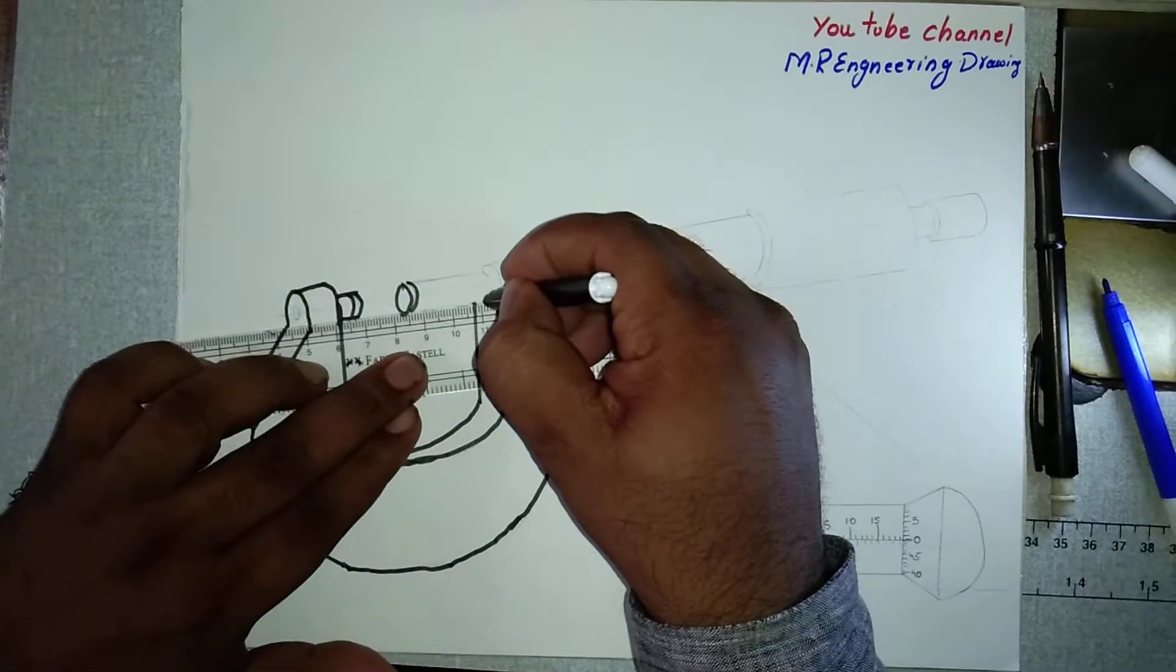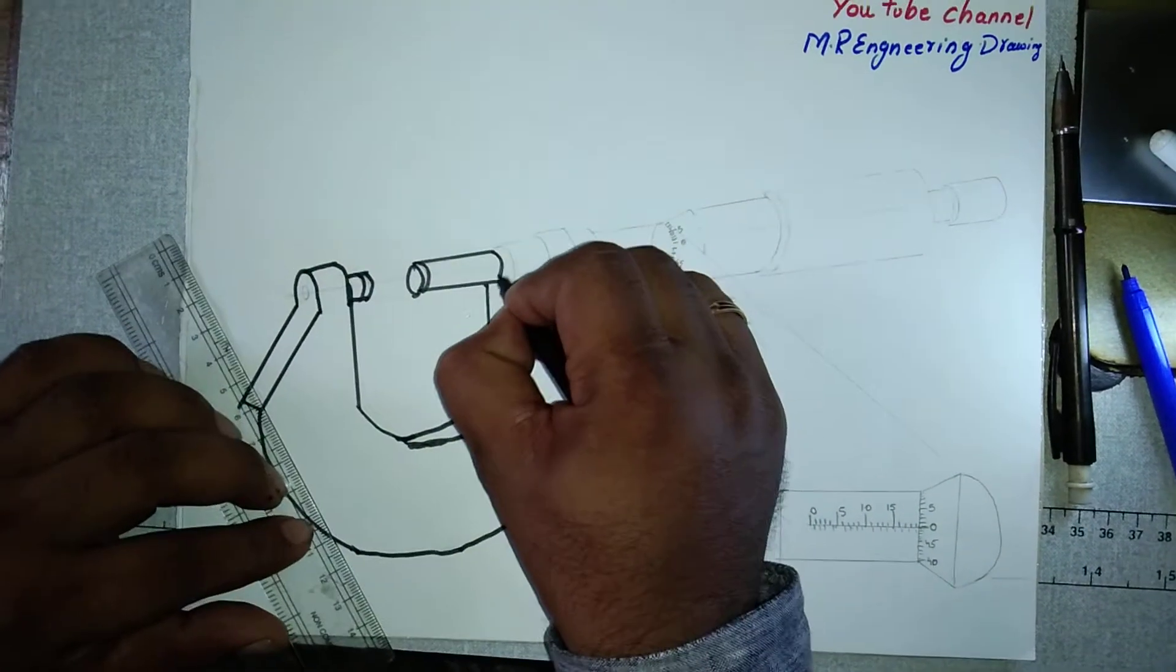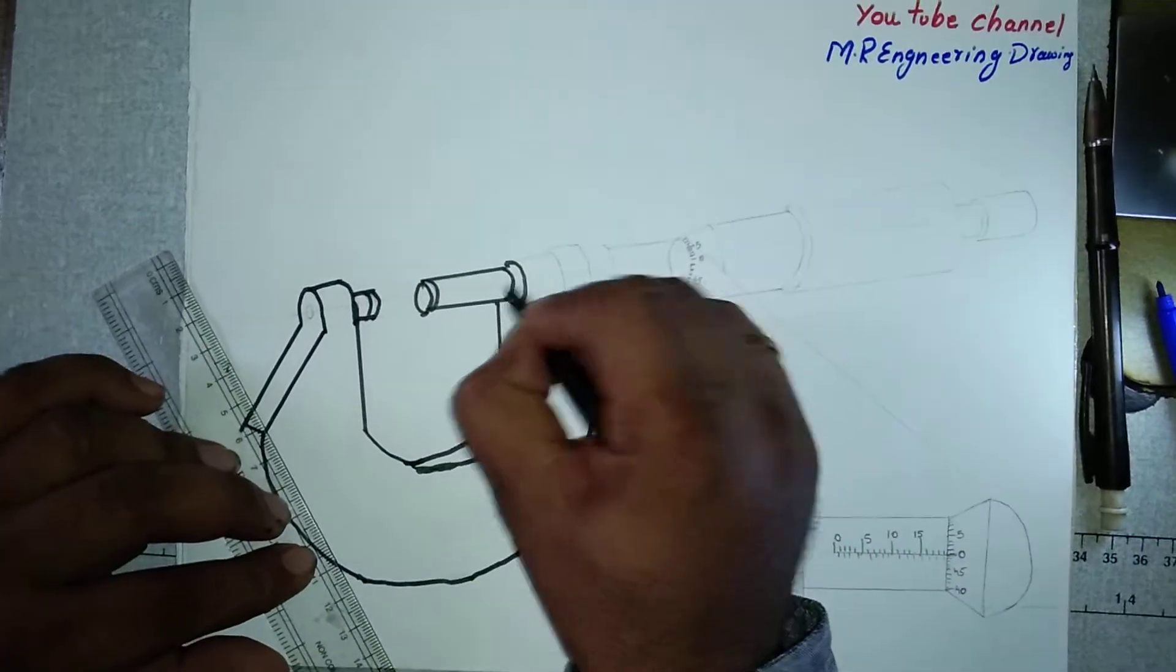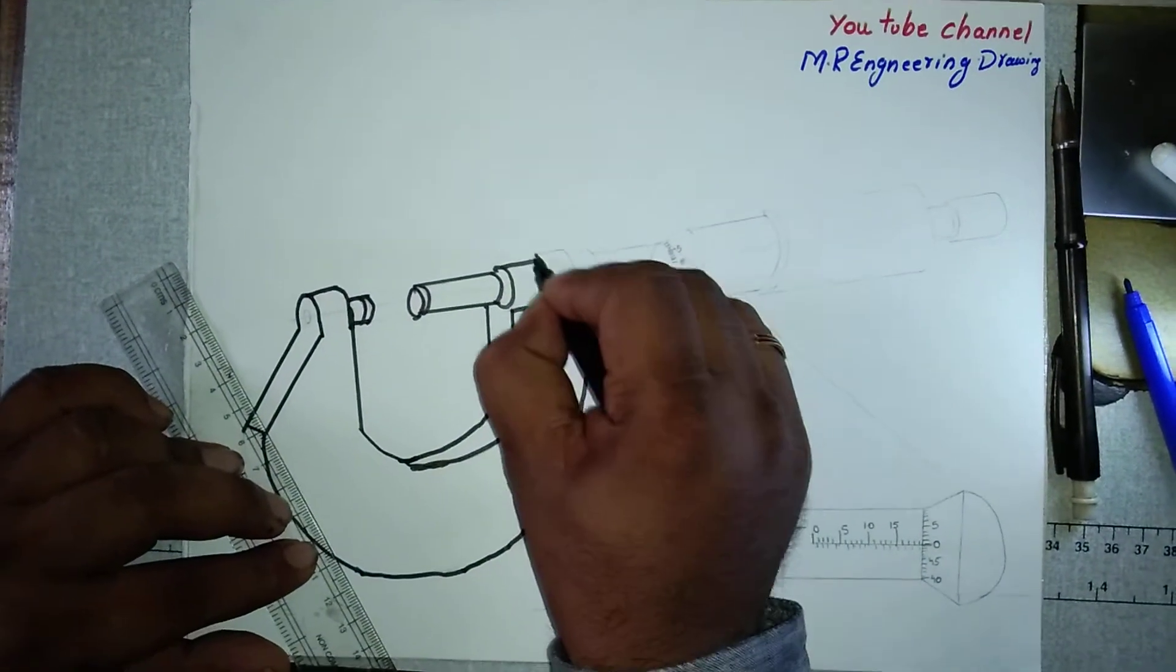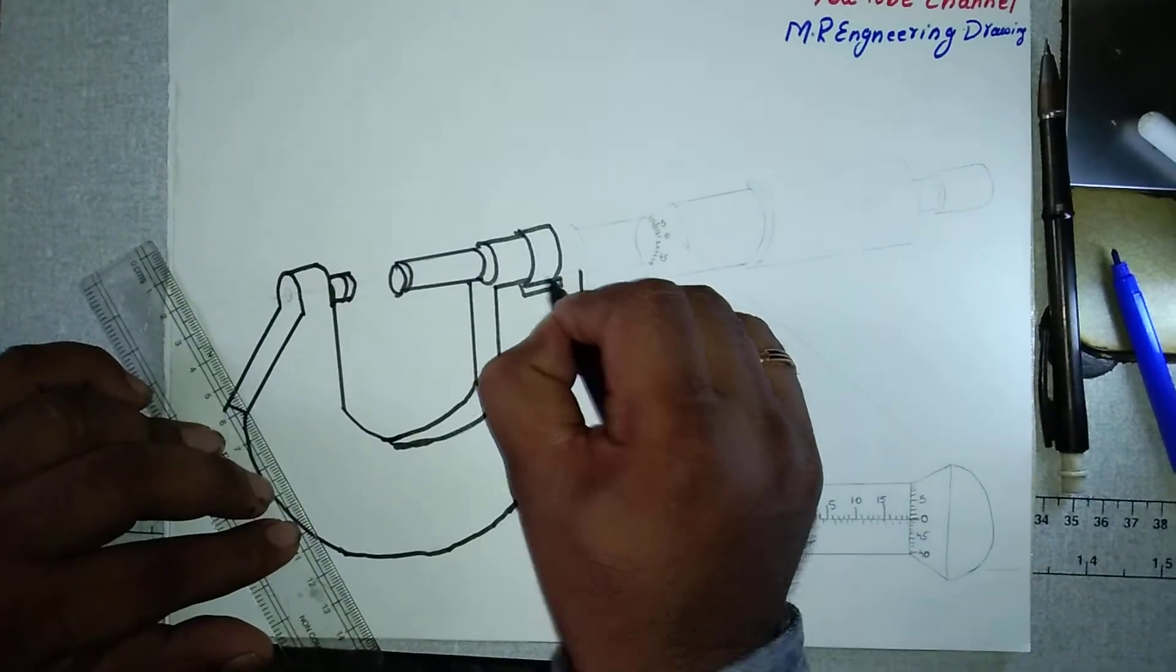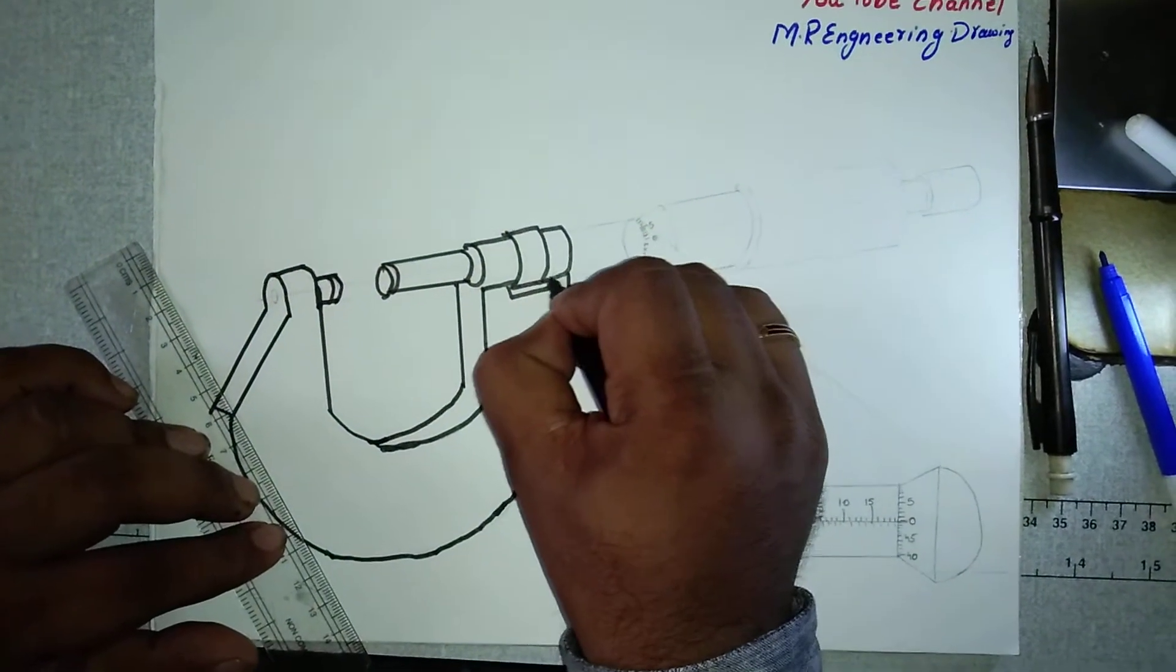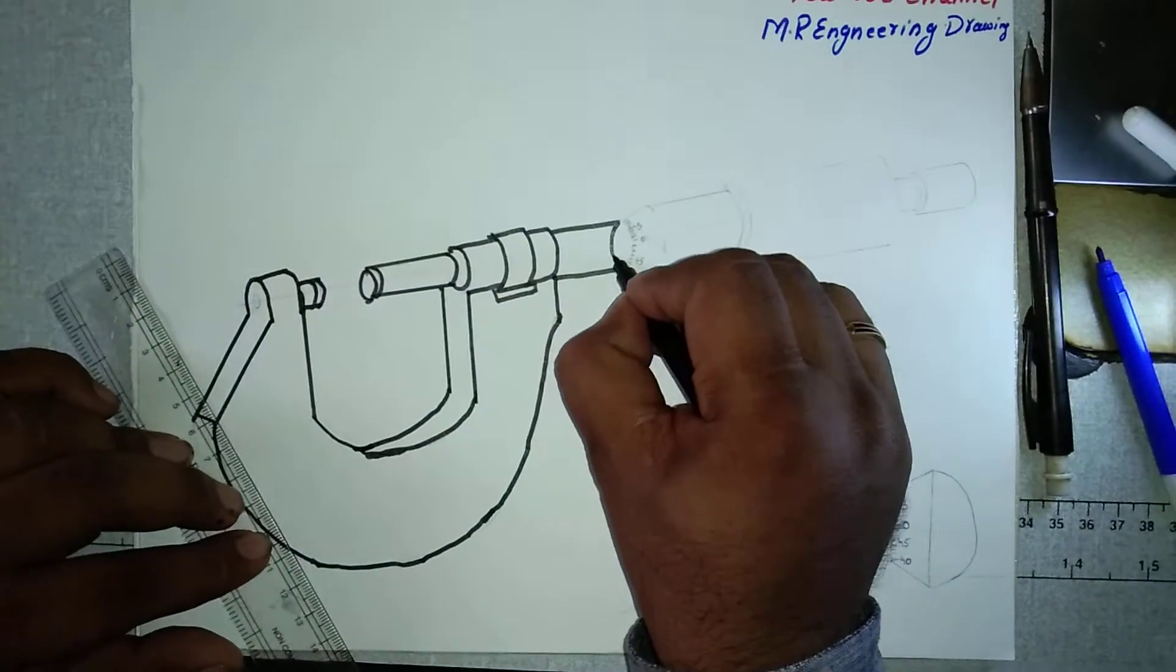The next thing I am drawing is the spindle. What I am drawing right now is a lock, that is called the spindle lock. This is called the thimble.